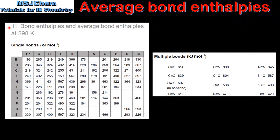A table of bond enthalpies and average bond enthalpies can be found in section 11 of the IB data booklet. On the left we have the values for single bonds and on the right we have values for multiple bonds.